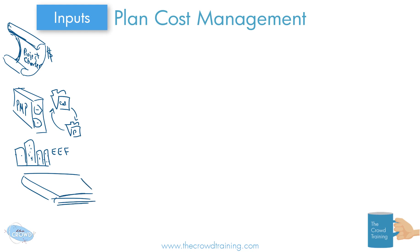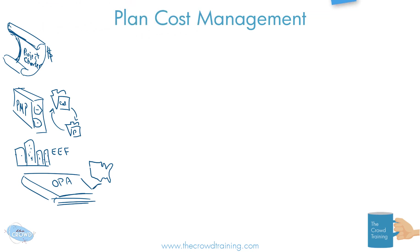Organizational process assets are those assets within the organization that are going to help us perform or influence how we're going to manage the costs. They could provide us templates. For instance, if we're in an international project where in the United States we use dollars, but the project is also working in Mexico and we have to worry about NAFTA agreements, different associated costs, exchange rates, and many other things to juggle — that could be part of your organizational process assets to assist us in that.